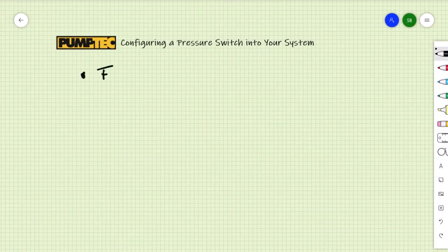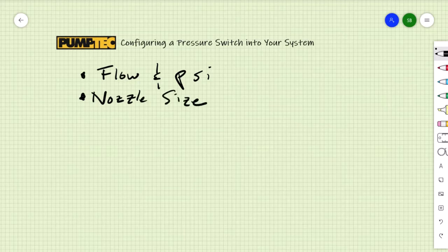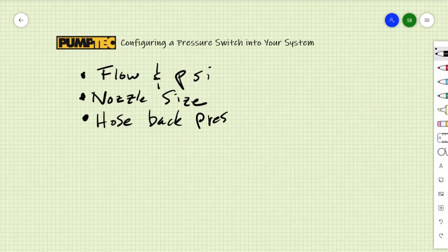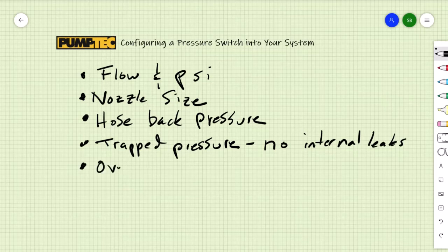Things to consider when designing a system to run correctly with a pressure switch include flow and pressure performance of the pump, nozzle size, hose back pressure, trapped pressure and no internal leaks, the use of an overpressure safety device, and fluid compatibility.